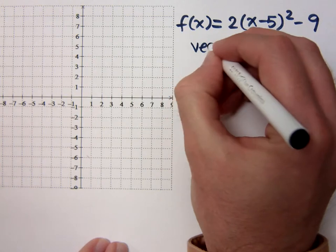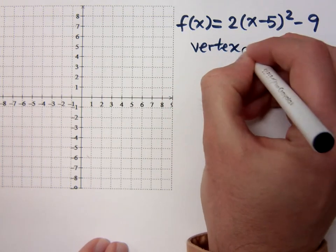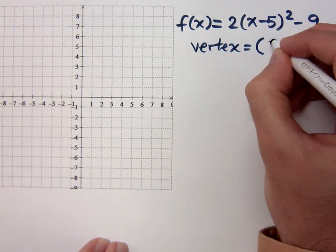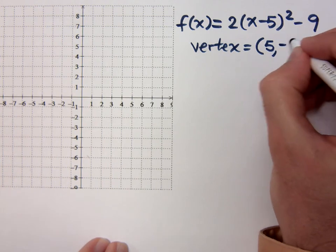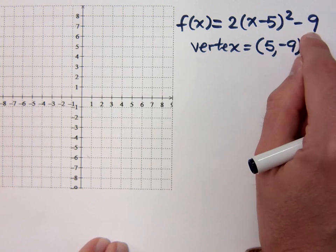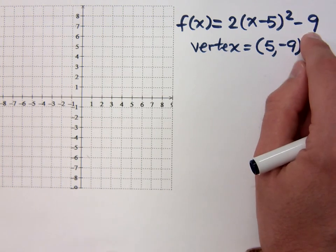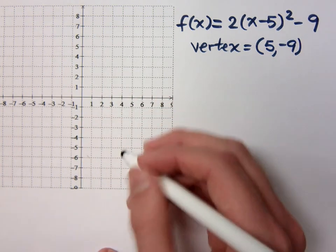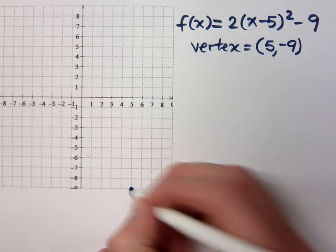Can you tell me the vertex? Positive 5, positive 5, and negative 9. Because think about what you would tell me. You would tell me go right 5, down 9. That's what you would have told me. So if I went right 5 and down 9, I would have this point right here.